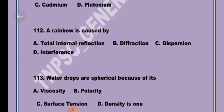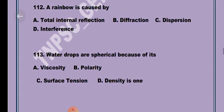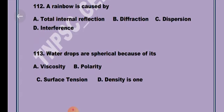Question 12. A rainbow is caused by Option A, Total internal reflection. Next question. Water drops are spherical because of its Option C, Surface tension.